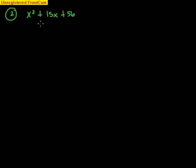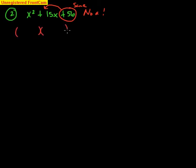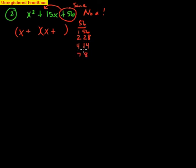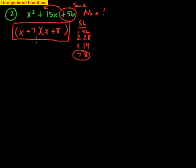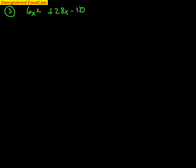Here's our next problem: x squared plus 15x plus 56. Again, no a value. We look at c — it's positive. Positive c means the same signs, and since b is positive, both signs are plus. x squared gives x and x. Factors of 56: 1 and 56, 2 and 28, 4 and 14, 7 and 8. Since the signs are the same, we add to get 15 — that's 7 and 8. The answer is (x + 7)(x + 8). FOIL to check and you'll get what you started with.